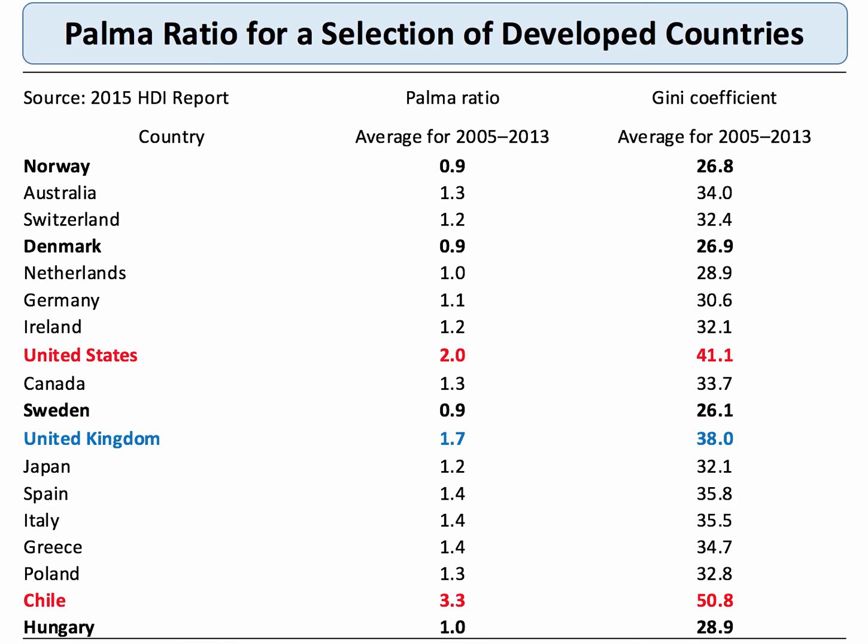This table shows countries with some of the lowest Palma ratios, averaging out for the years 2005 to 2013. We find that Norway, Denmark and Sweden have a Palma ratio of less than one — so the income of the top 10% is actually less than the income of the bottom 40%. The UK for example is 1.7, and then some countries — these are developed nations of course — like Chile, the Palma ratio is much higher, so there's more inequality in Chile. Indeed it's the country with the highest income inequality amongst OECD countries.